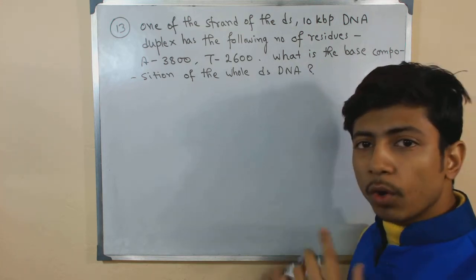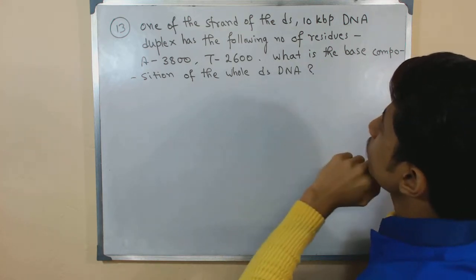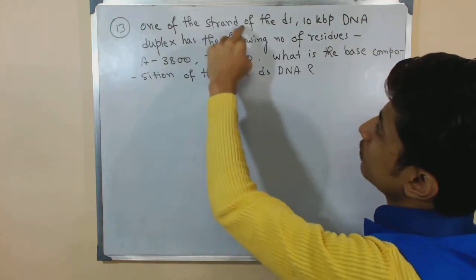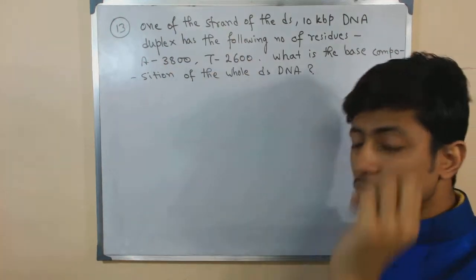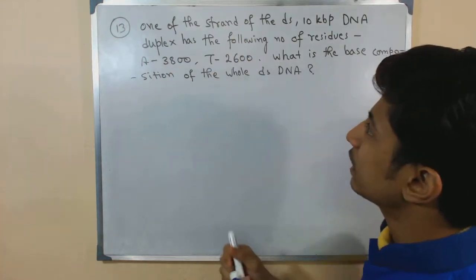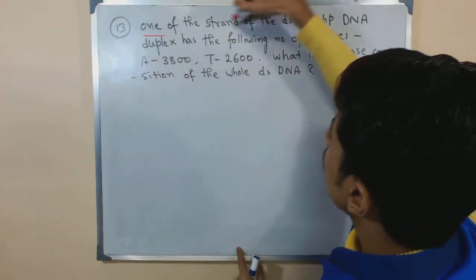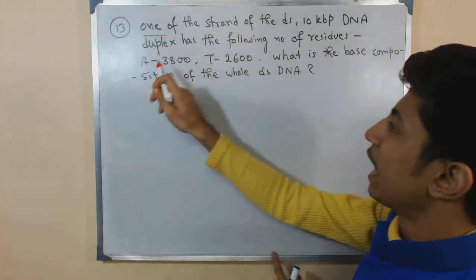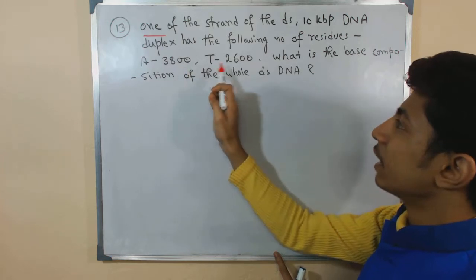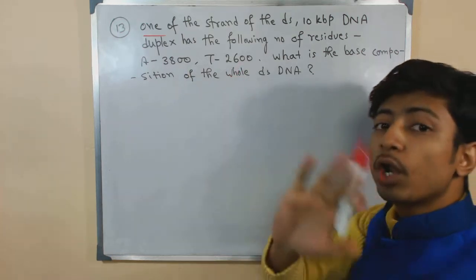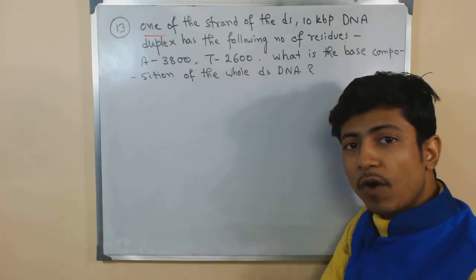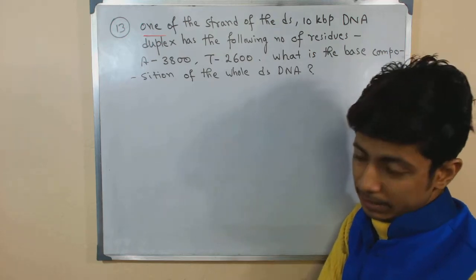One of the strands contains this number of residues. Read very carefully: it's telling us that one strand of the double-stranded DNA has adenine 3800 and thymine 2600. What is the whole composition of bases for the overall double-stranded DNA?